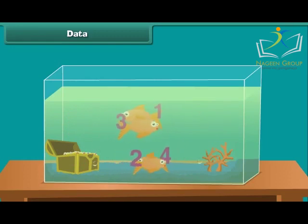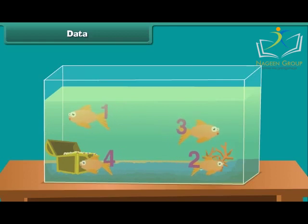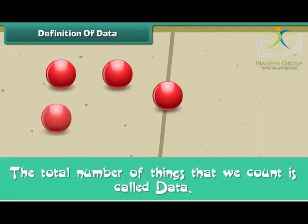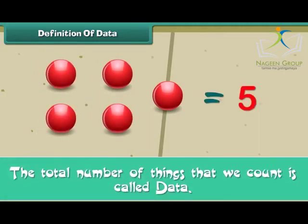Hence, the data is 4. Number of orange fishes is 4. Friends, we now know that the total number of things that we count is called the data.